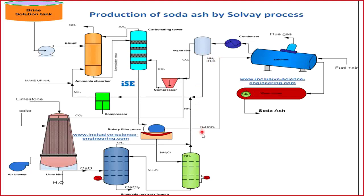There is a chance that the sodium bicarbonate may have some ammonium chloride attached to it. When that ammonium chloride goes into the calciner, it also decomposes into ammonia. That is why the water from the separator may contain some ammonia as well. Moving to the next section: in the filter, we separated the ammonium chloride aqueous solution from the sodium bicarbonate precipitate.